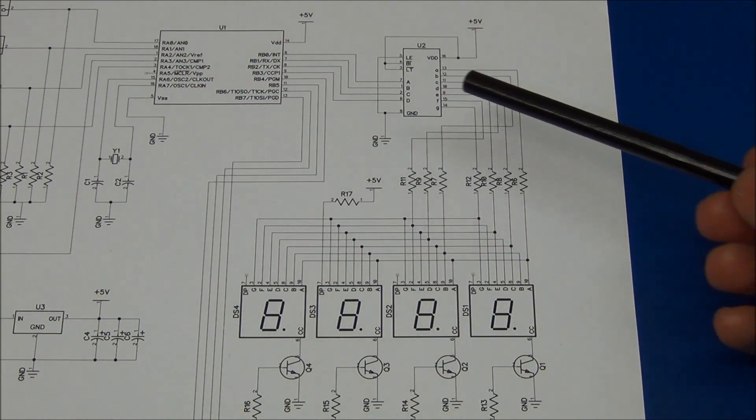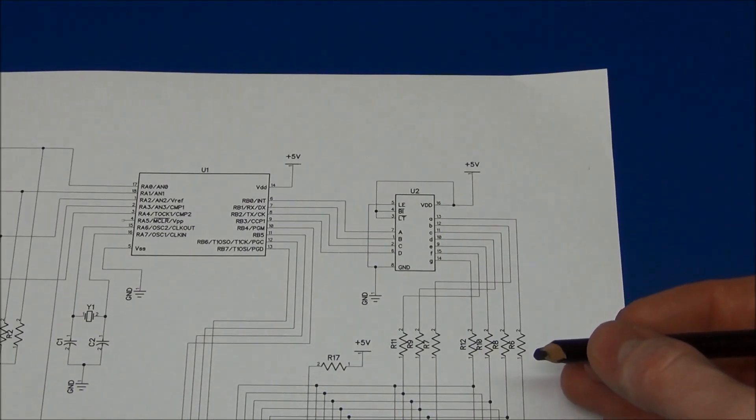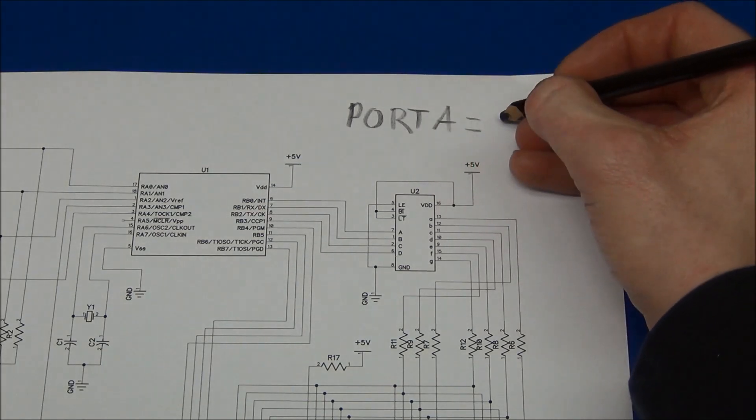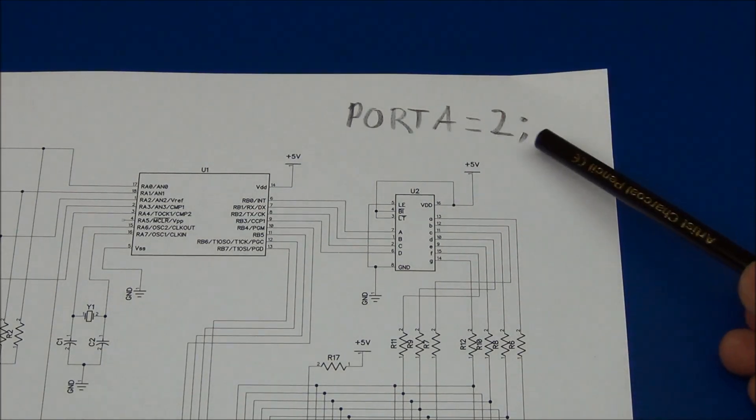And this also gives another huge advantage. For example, if we have a PIC microcontroller, you could just say port A equals 2.